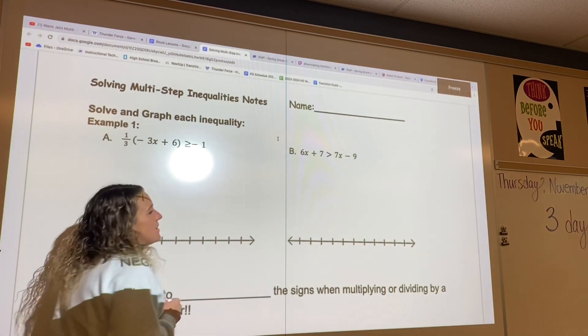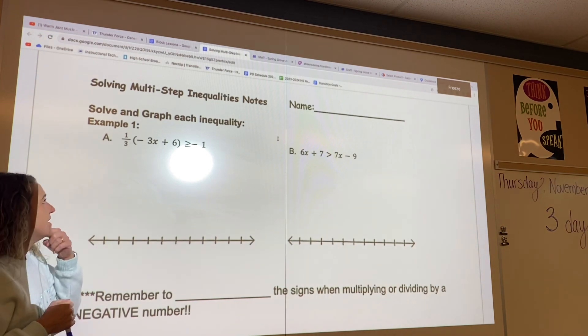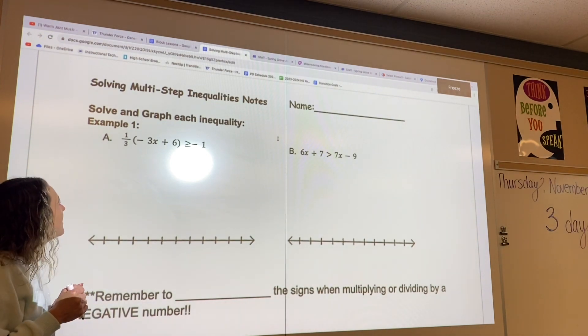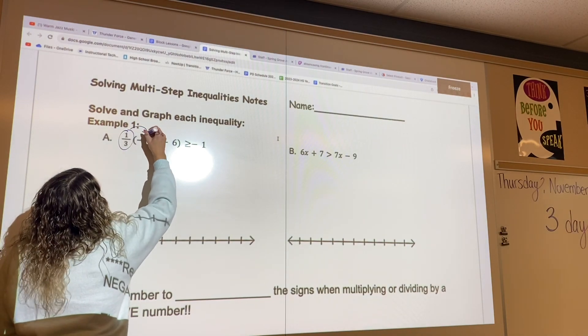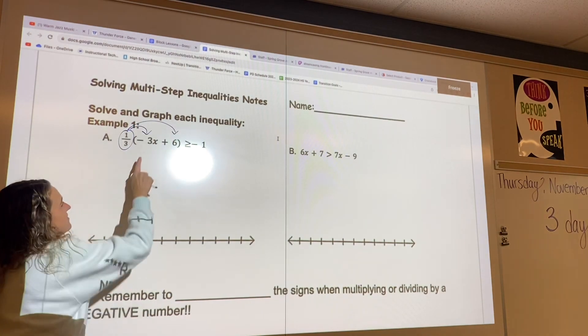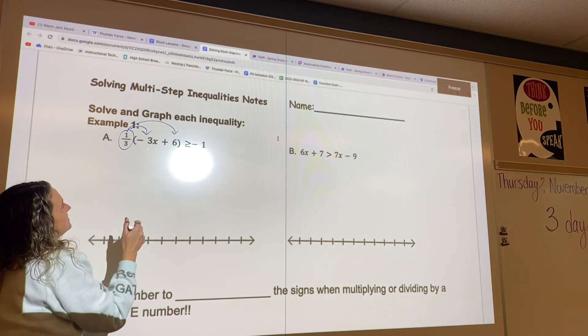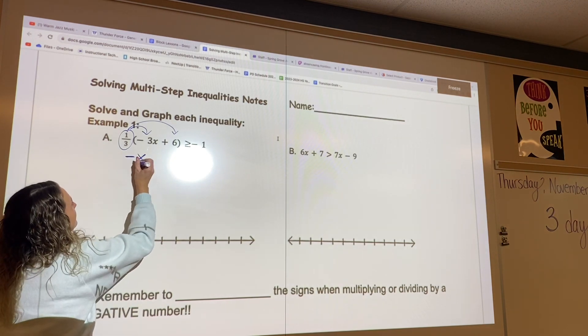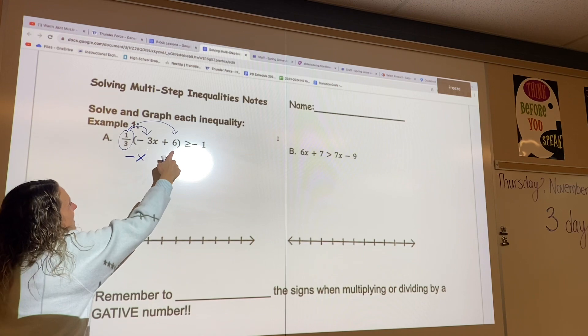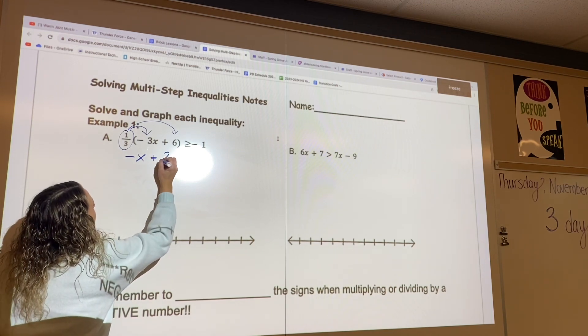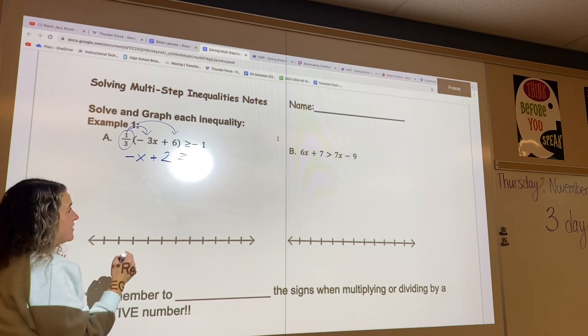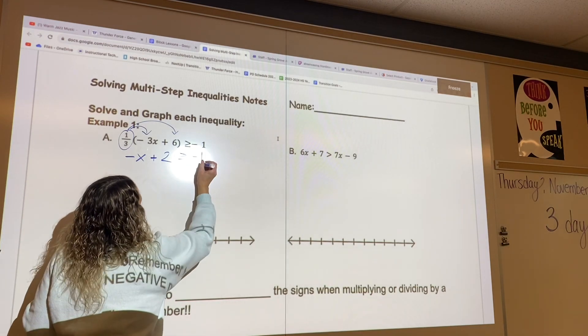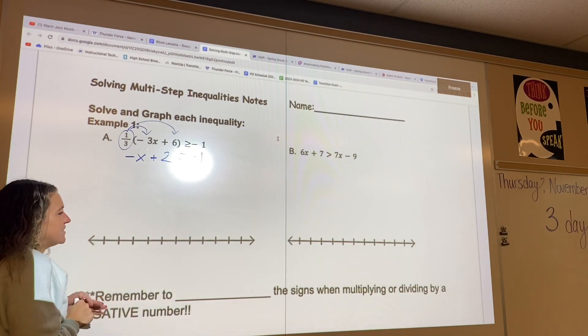So let's look at example one, letter A. First step we're going to have to do here, obviously, is distribute. So let me take our one-third on the outside, and I'm going to multiply that by the negative 3x inside, which would give me negative x. One-third times 6 would give me a positive 2. And then I'm going to bring down my inequality symbol, which is greater than or equal to, and then negative 1. Pretty simple so far.